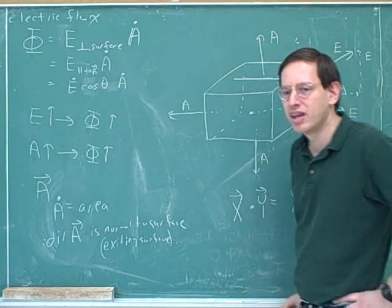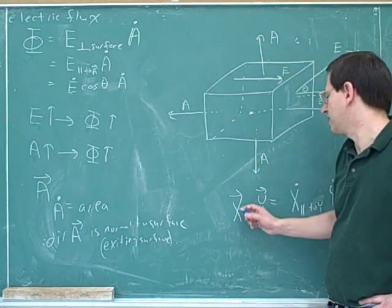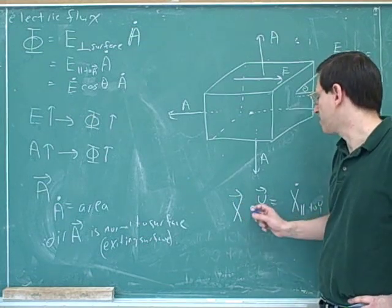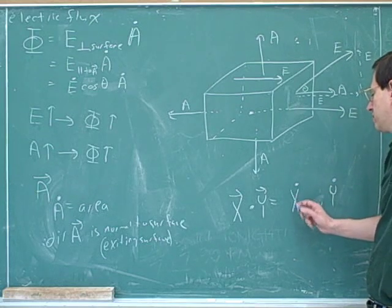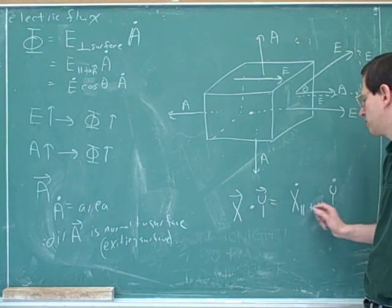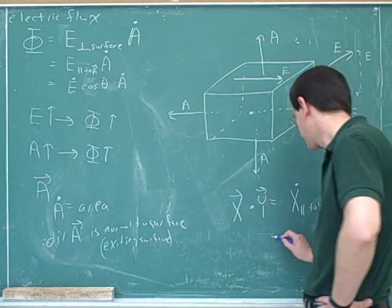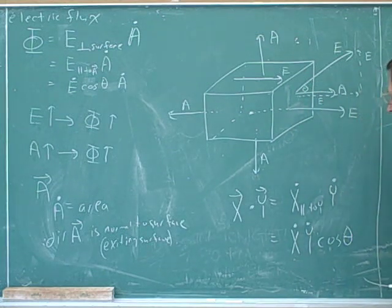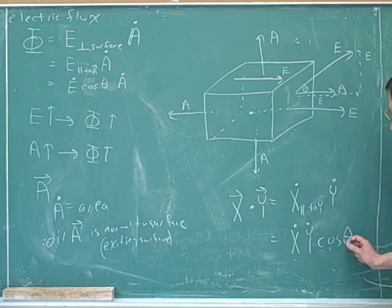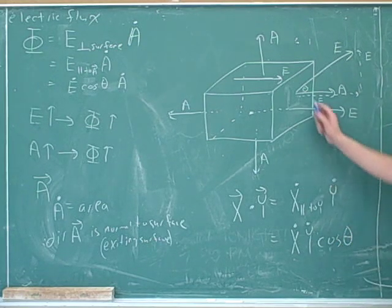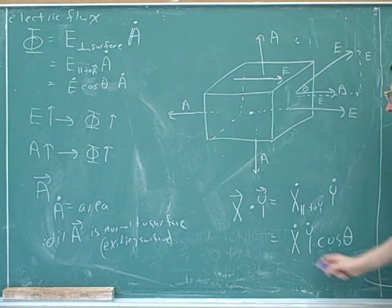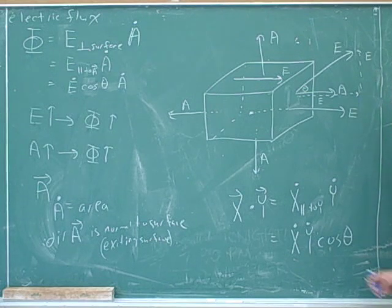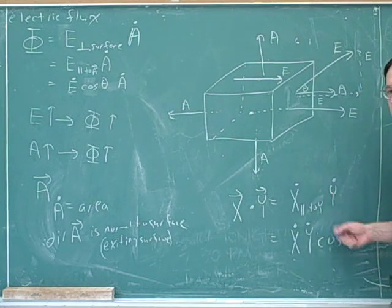Now we can talk about the idea of a dot product. A dot product is defined for two vectors, and its whole purpose is to get just the component of one vector that is parallel to the other vector. We just proved that the way to get the component of X that is parallel to Y is to take the cosine of the angle between X and Y. So anytime you want to multiply the magnitudes of two vectors but only pay attention to the component of one that's parallel to the other, that's when you use a dot product.